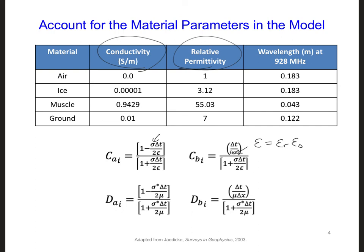First, we can note that none of the materials in this table are magnetic. So there is no magnetic loss. So this sigma star is going to be equal to 0, except in the PML region. Also, the permeability mu is going to be equal to that of free space, mu naught, because none of the materials are magnetic.